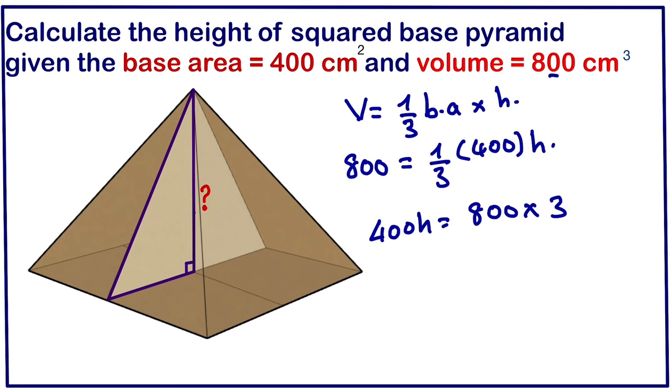If we want to look for h we need to divide by the coefficient of h which is 400. So h will be equals to 800 times 3 divided by 400. We can simplify. 800 divided by 400 is 2. So this implies the height is equals to 6 cm.